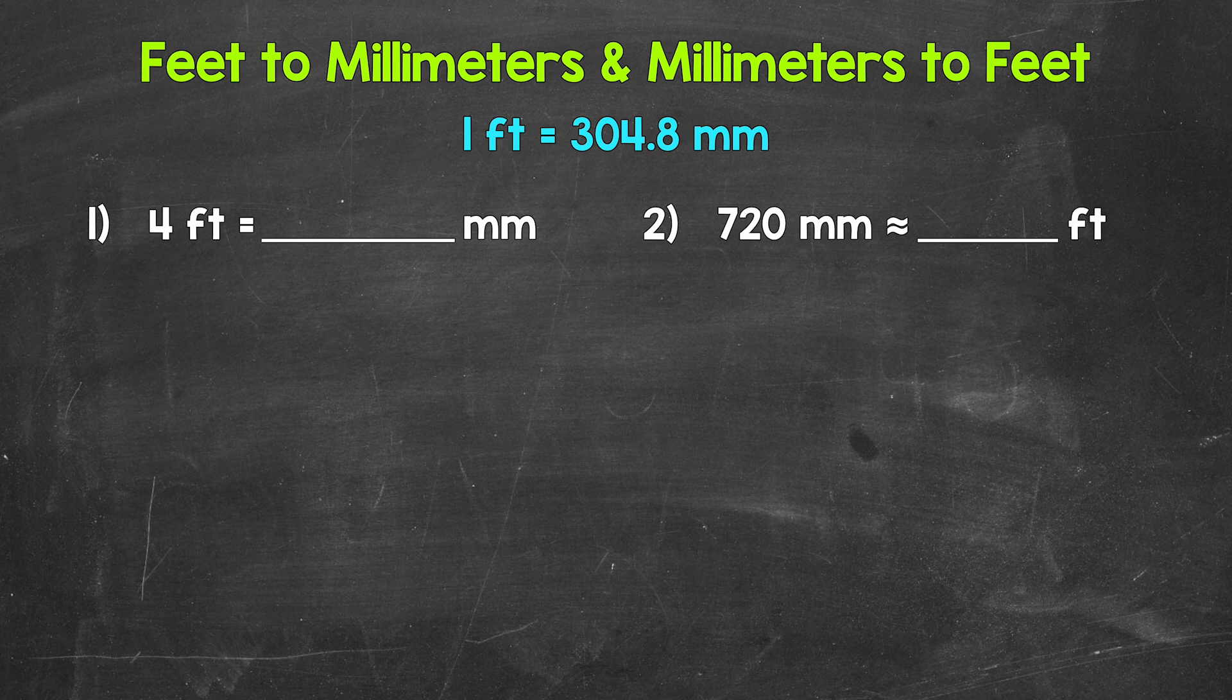Starting with number one, where we have four feet equals how many millimeters? Well, each foot equals 304.8 millimeters. So we have 304.8, 304.8, 304.8, and 304.8. So we need to do four times 304.8.